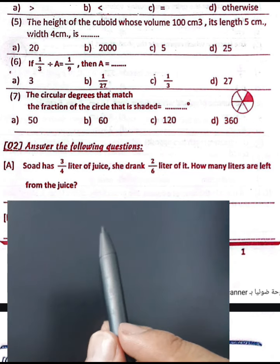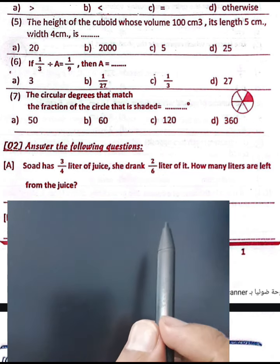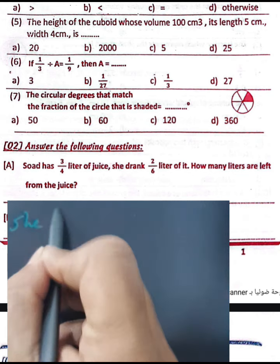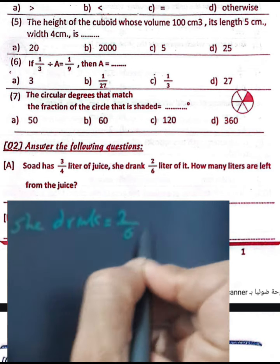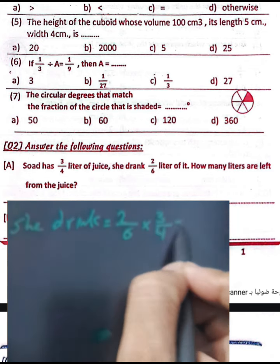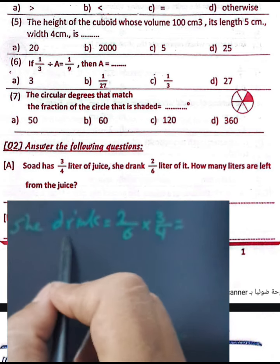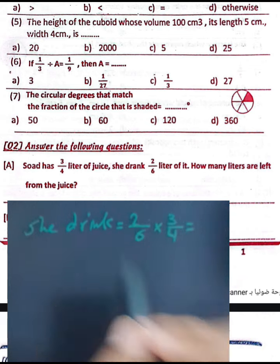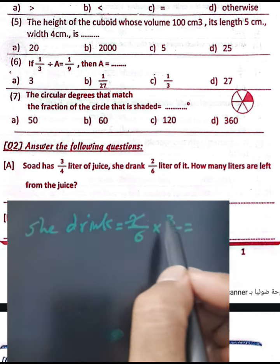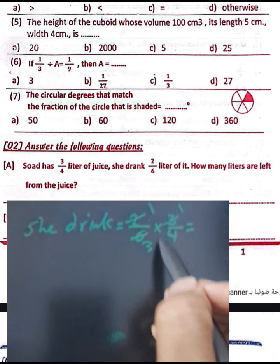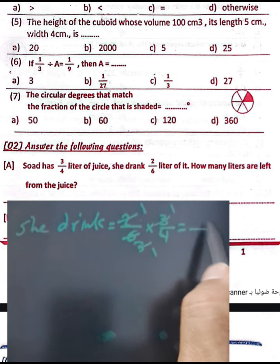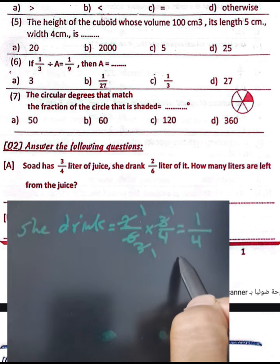Problem number two: Suad has three-fourths liter of juice. She drinks two-sixths liter of it. How many liters are left? First, find how much she drank. Two-sixths can be simplified: divide numerator and denominator by 2 to get one-third. Then one-third equals one-fourth — wait, we multiply two-sixths times three-fourths. Two times one equals 2, six times two equals 12... simplifying: two-sixths simplifies to one-third, and one-third of three-fourths equals one-fourth.